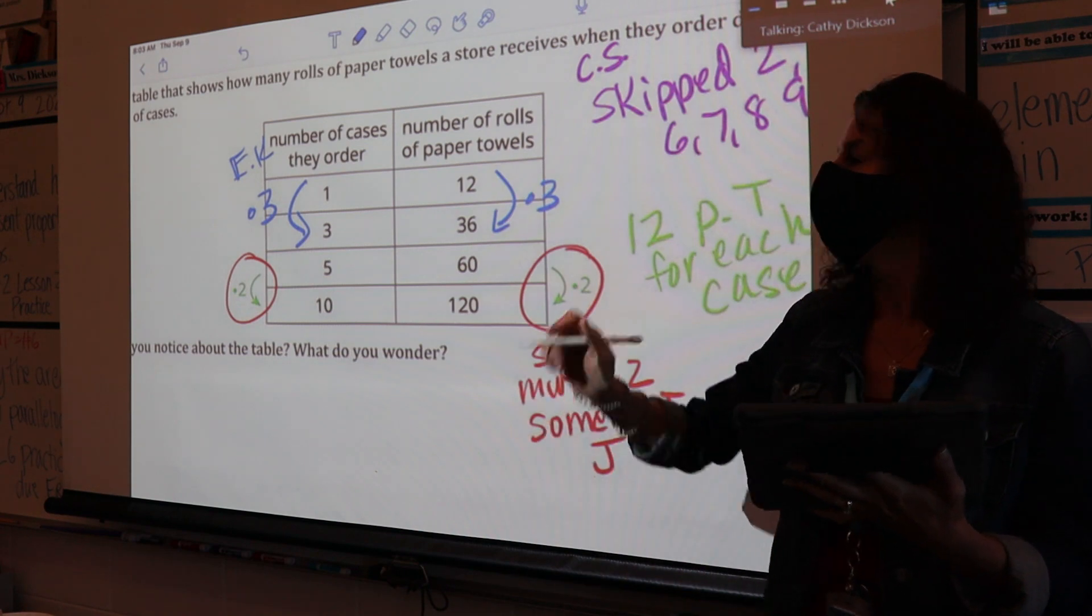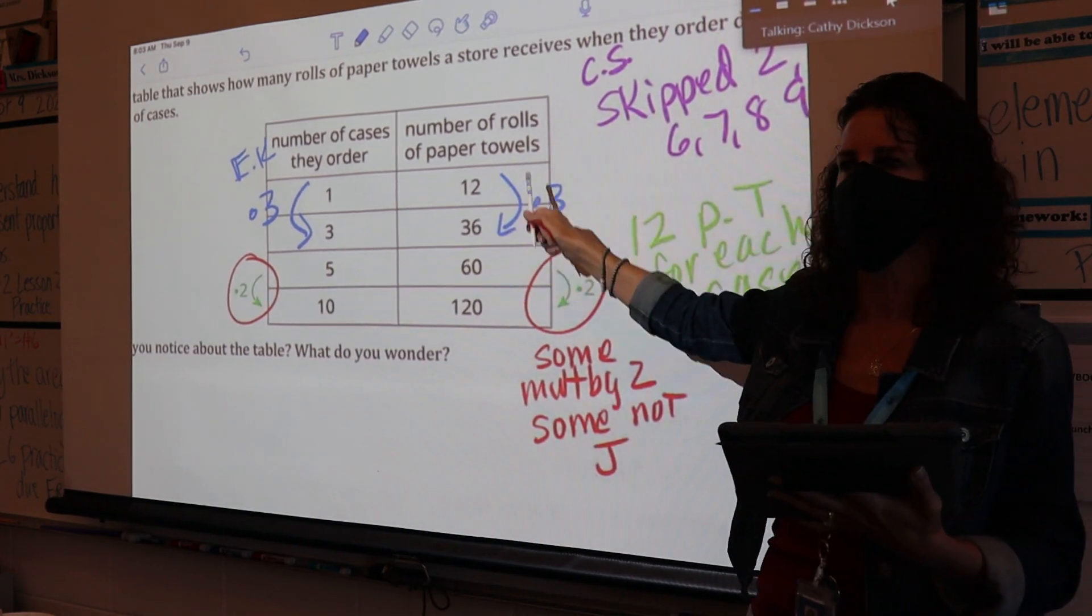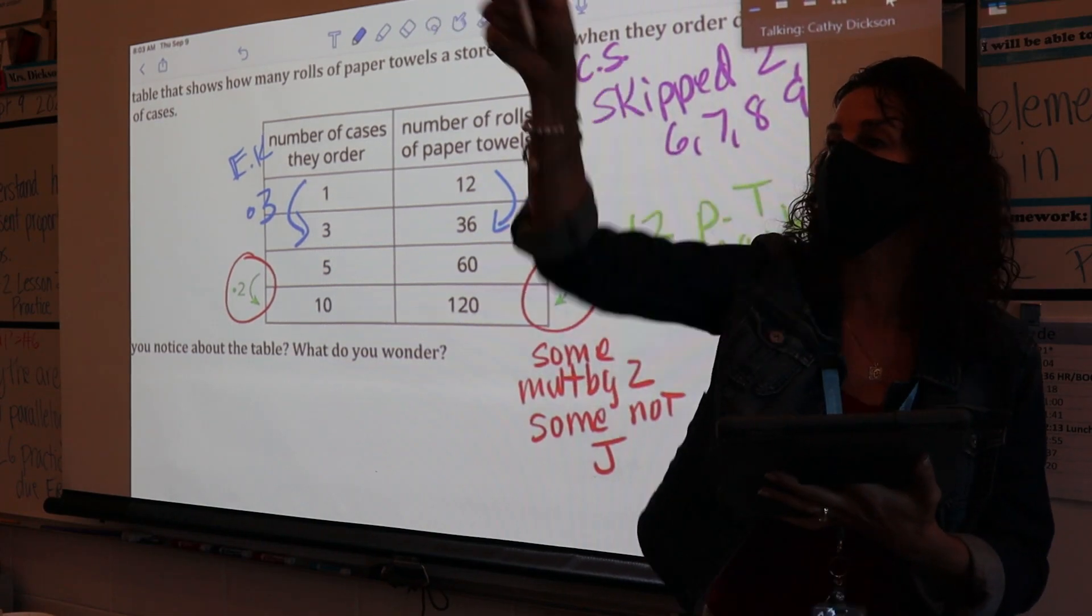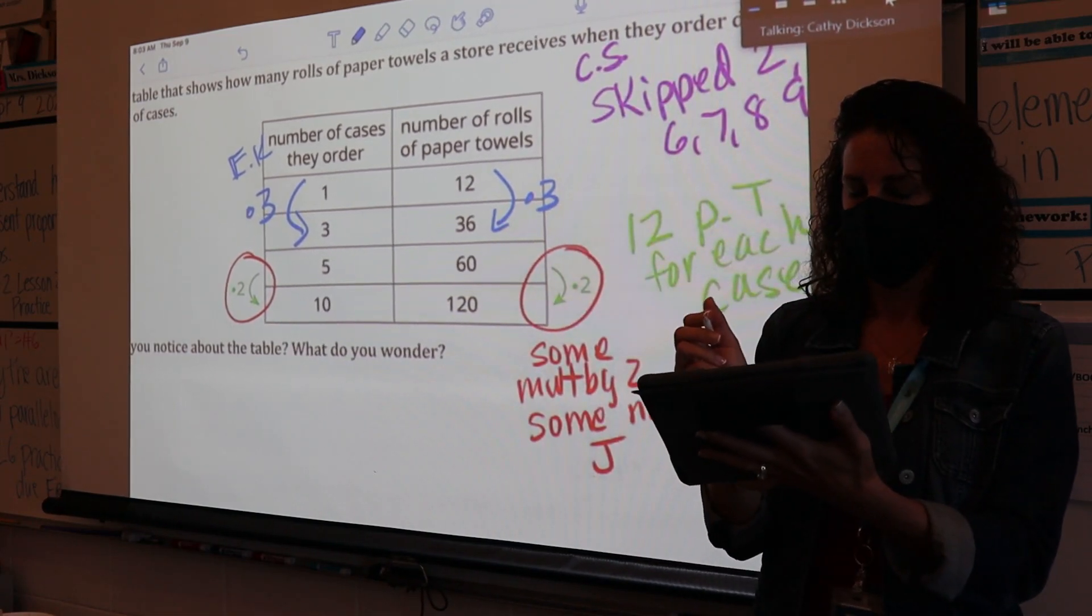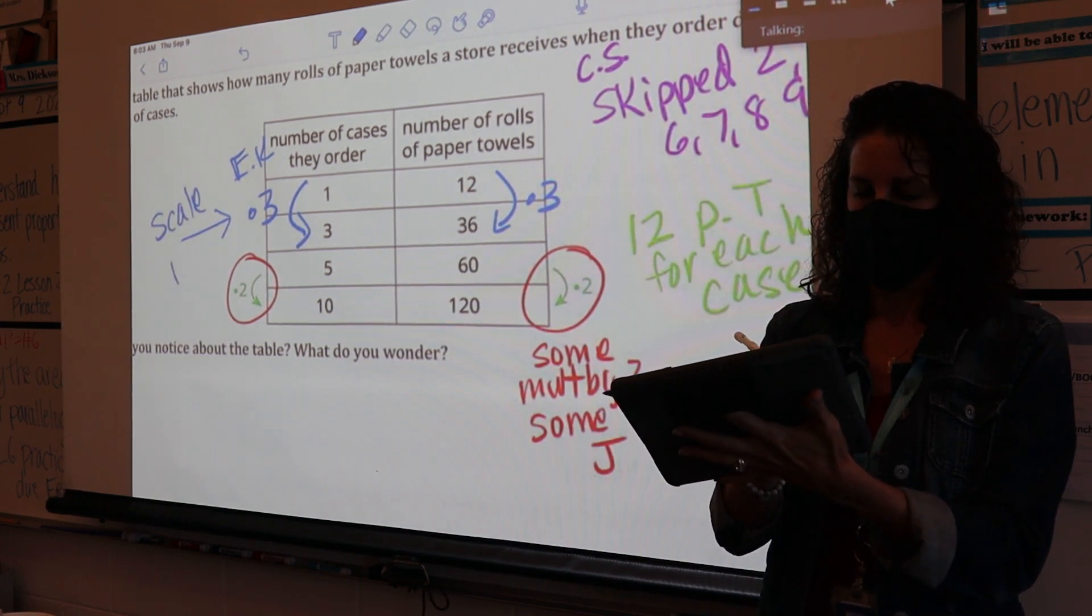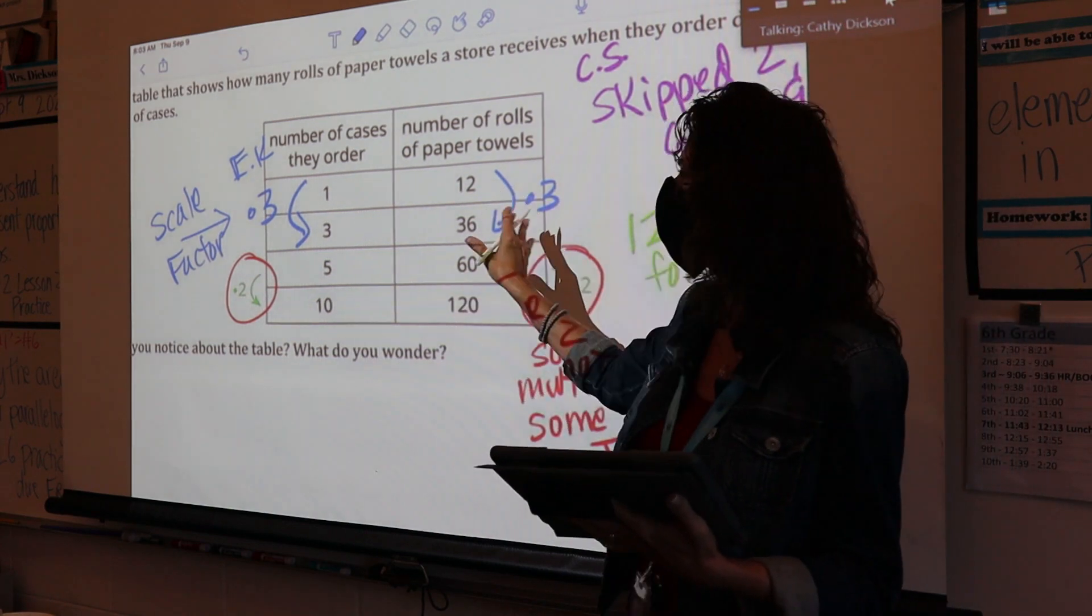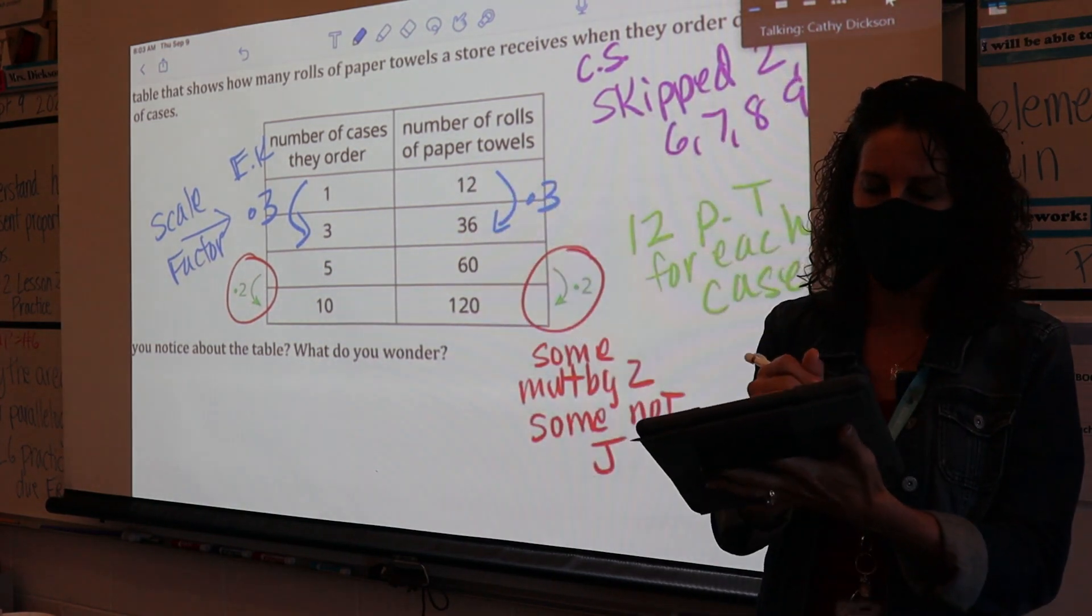So you're noticing here it's multiplied by 3. Excellent job. One, two, three. And remember we talked about how this relates to Unit 1. How does that relate to Unit 1? What is that timesing by 3? Way at the back corner. Yes, excellent. Each side would have to be multiplied by the same number, and that represents scale factor.